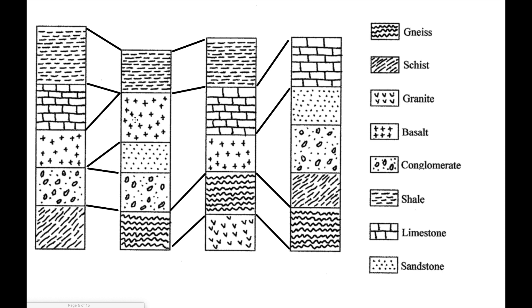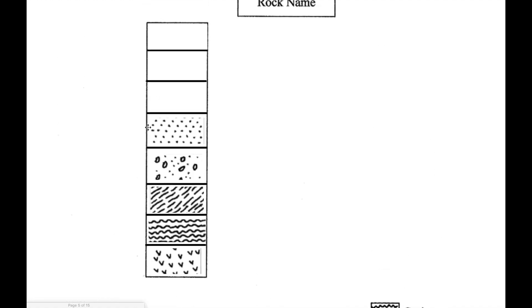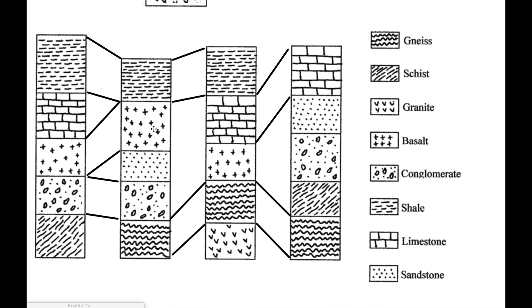And then right above the sandstone I should have basalt. Next up, what goes above basalt? In this diagram limestone is right above basalt, here limestone is right above basalt. Here I've got shale above basalt, but I can see through my diagram that that's only because the limestone has been eroded away in between these layers. So above basalt I should have limestone.